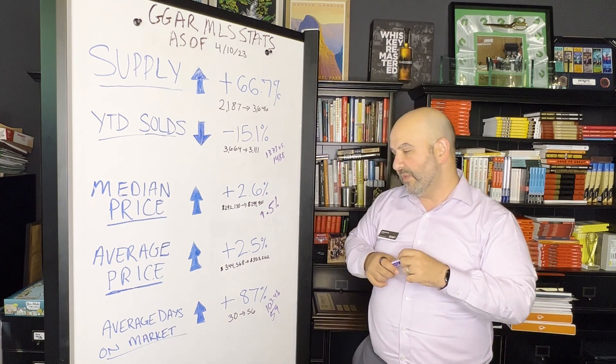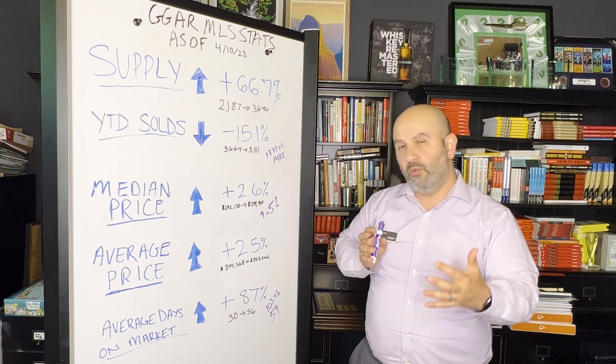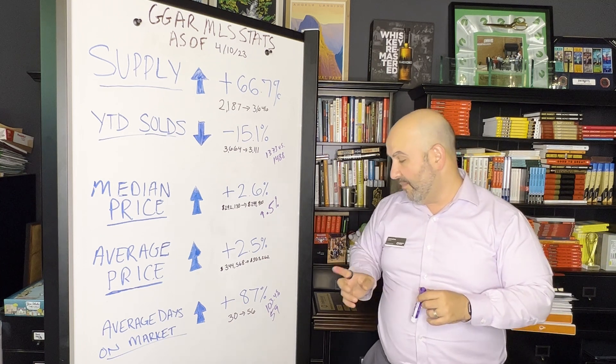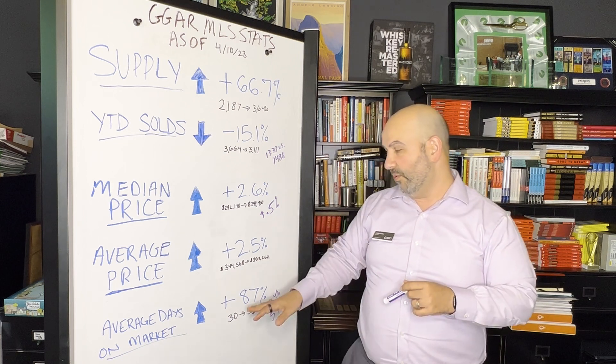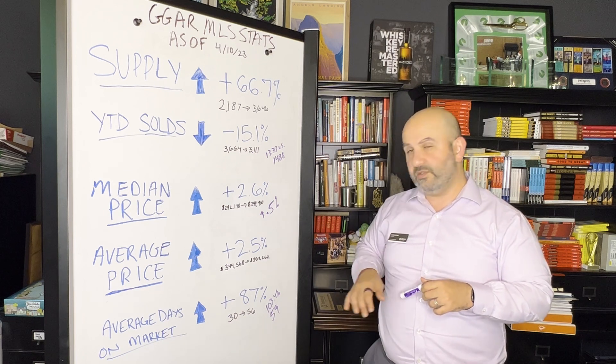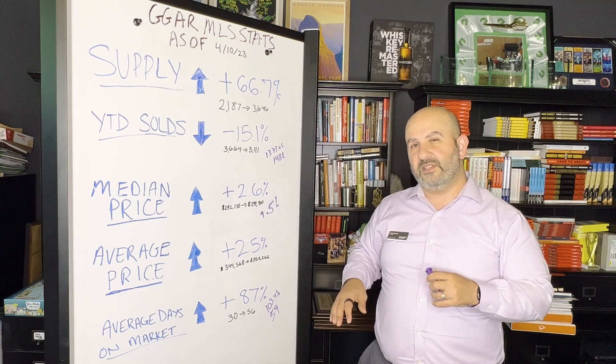...is average days on market. Again through the first three months of the year we've gone from 30 last year to 56 this year. The month of March however is a 103% increase, whereas year-to-date it's an 87% increase. We've gone from 29-30 days on the market last March to right at 60 this March.